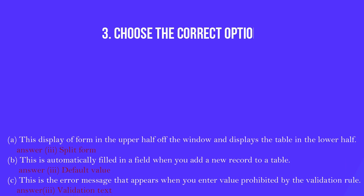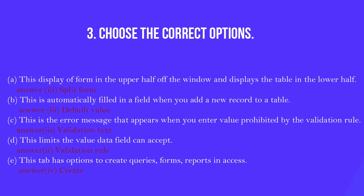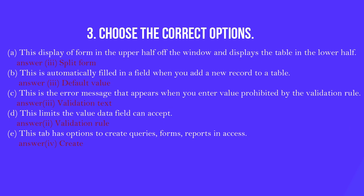Third question: choose the correct options. A — this displays the form in the upper half of the window and the table in the lower half: that is a split form. B — this is automatically filled in a field when you add a new record to a table: that is default value. C — this is the error message that appears when you enter a value prohibited by the validation rule: that is validation text. D — this limits the value that a field can accept: that is validation rule. E — this tab has the options to create queries, forms, and reports in Access: that is the Create tab.